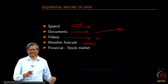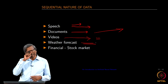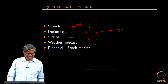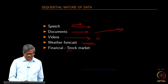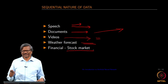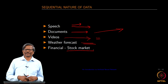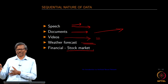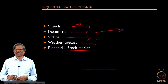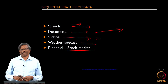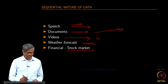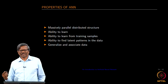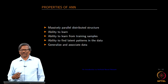Weather forecasting is again based on historical information — it is not an isolated incident. Similarly, the stock market deals with several different variables based on which you predict the stock price for a given script. So how do you process these?